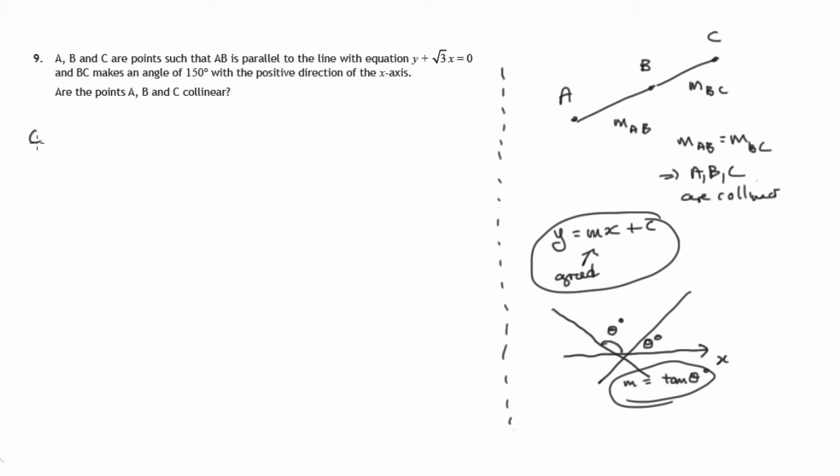So let's consider A, B. So that's our first section. y plus root 3x equals 0 can be rearranged y equals negative root 3x. And if we compare y equals mx plus c, we can see that c is 0, but the gradient is negative root 3. Now, if this section of line from A to B is parallel to this, then we know that the gradient of that section, A, B, must be the same as the gradient of this line. So we've worked out the gradient of section A, B. It's negative root 3.